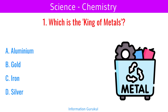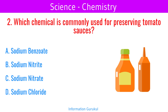Which is the king of metals? Gold. Which chemical is commonly used for preserving tomato sauces? Sodium benzoate.